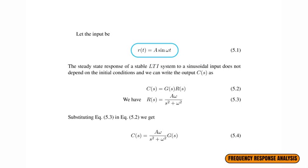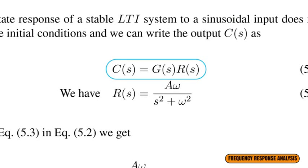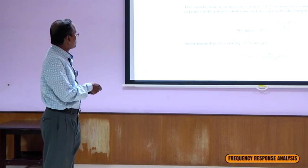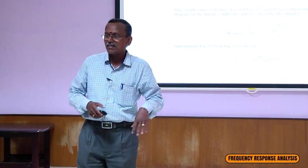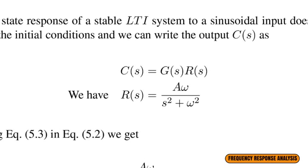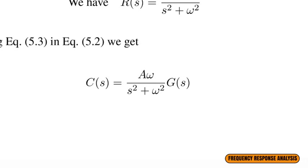In the frequency domain, C(s) = G(s) × R(s), where G(s) is the transfer function of the system — the mathematical model. In the time domain we do convolution, but in the frequency domain it becomes simple multiplication. The Laplace transform of the sinusoidal input A sin(ωt) is Aω/(s² + ω²), so the output C(s) = [Aω/(s² + ω²)] × G(s).